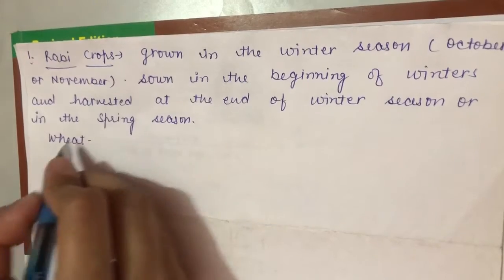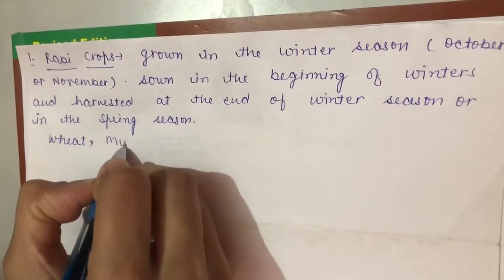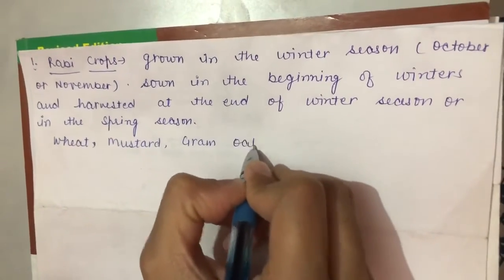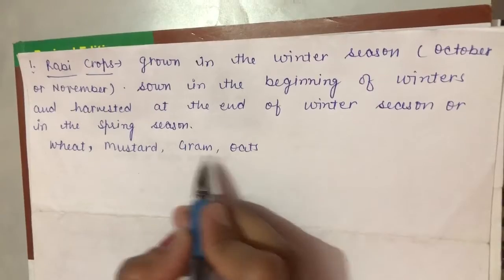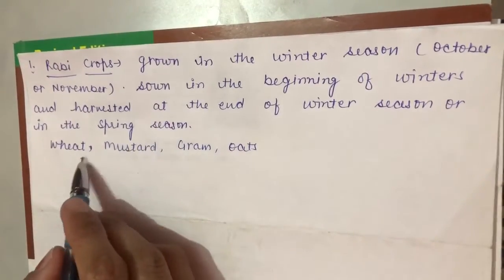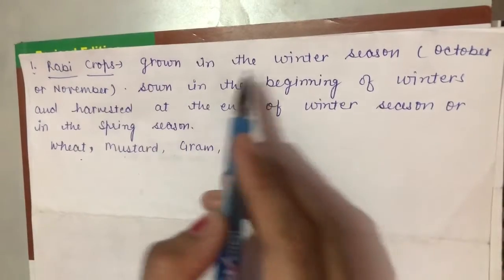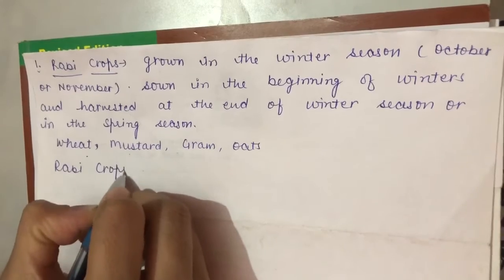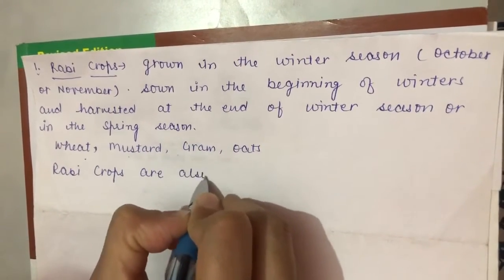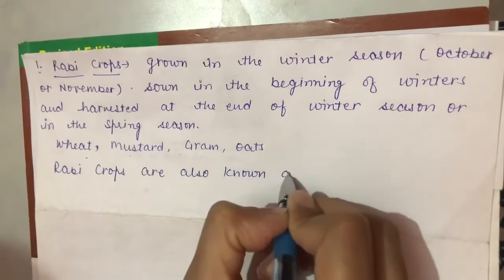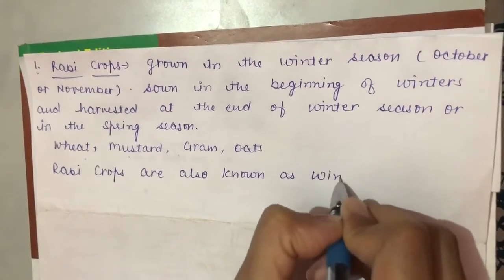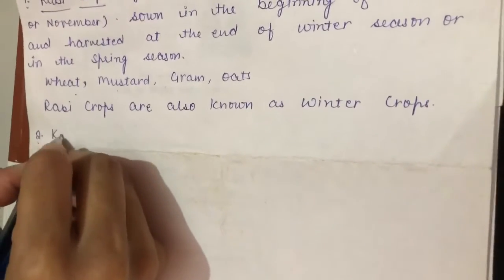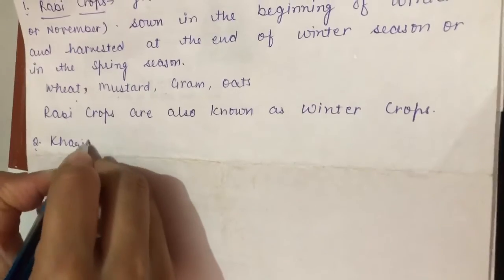Likewise wheat, mustard, gram, and oats are also grown in the winter season. That's why these are also Rabi crops. As these are grown in the winter season, Rabi crops are also known as winter crops.